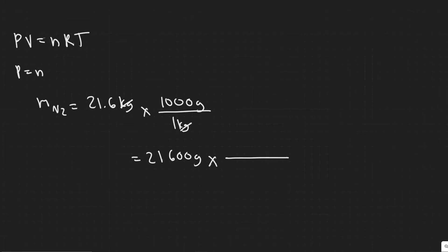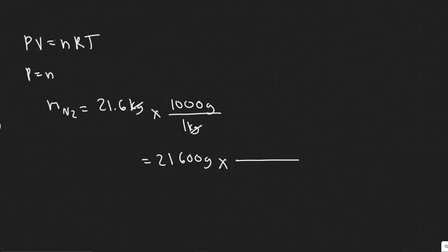And then now we need to find the number of moles. You need to know now that if you type in molar mass of N2, you'll find out what it is. But essentially, for every one mole of N2, there's 28 grams. So you basically are just dividing by 28 to get it in now moles of N2. So 21,600 divided by 28, that'll give you 771.4 moles of N2.